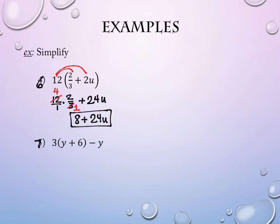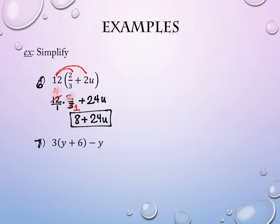You could also multiply across: 12 times two on top is 24, and three on bottom, so 24 divided by three is also eight. Either way, the numbers stay pretty small on this one.